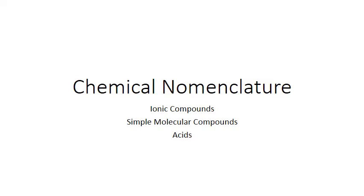In this PowerPoint we're going to review some of the basics of chemical nomenclature. There are a wide variety of different compounds out there and an equal diversity in their naming systems. We just don't have time to cover all of these, so we're going to focus on three types: ionic compounds, simple inorganic molecular compounds, and acids.